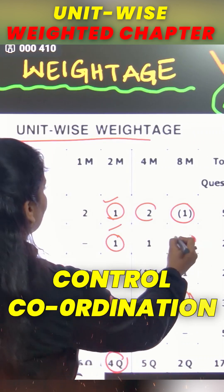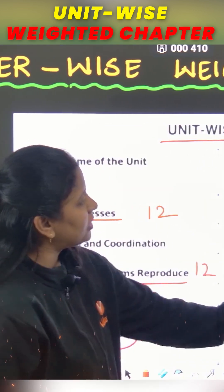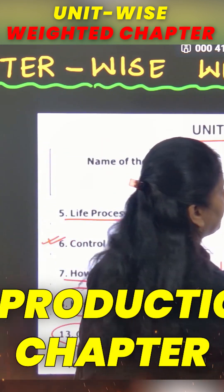Then, control and coordination will be 8 mark question, heredity will be 8 mark question. So, these are the chapters from where you are going to get 8 mark question, reproduction chapter. You're not that took 10 mark.